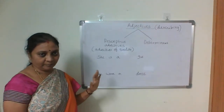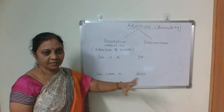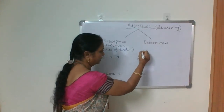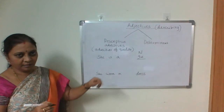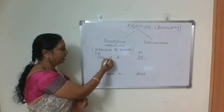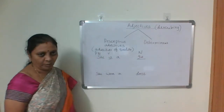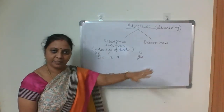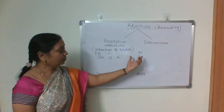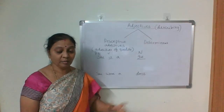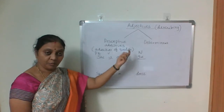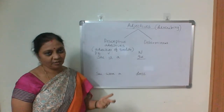Now look at this example: 'She is a girl.' Girl is a noun here. She is a pronoun and 'is' is a verb. It is a meaningful and correct sentence. To describe this girl, the words which we use — those are adjectives.